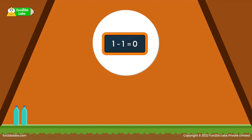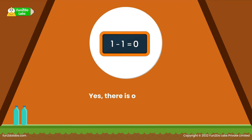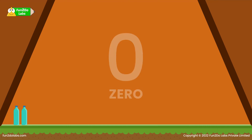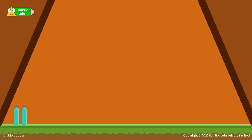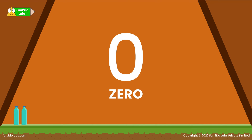Is there a way to show 'no one' in math? Yes, there is! Zero helps us indicate no one. When there was no one in the tent, that means there were zero people in the tent.